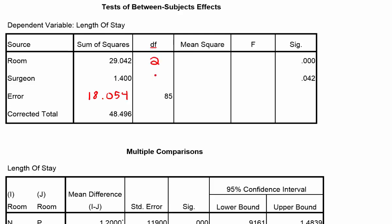Because there are three different surgeons, it'll be degrees of freedom 2 for the surgeons. They tell us the error degrees of freedom is 85. That means the total degrees of freedom is 85 plus 2 plus 2, or 85 plus 4, which equals 89.